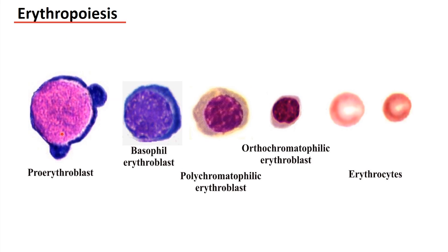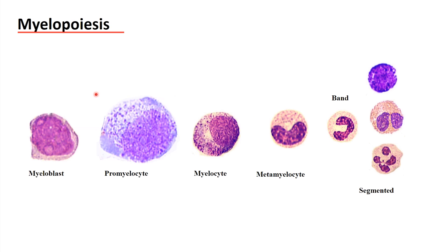This is the summary of erythropoiesis: proerythroblast, basophilic normoblast, polychromatophilic normoblast, orthochromatophilic erythroblast or normoblast, reticulocyte, and red blood cells. With the myeloid line: myeloblast, promyelocyte, myelocyte, metamyelocyte, band, and the different segmented forms such as neutrophil, eosinophil, and basophil.